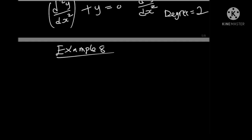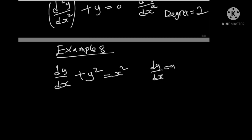Example 8: suppose we have dy over dx plus y squared equals to x squared. As you can see, we only have one differential coefficient: dy over dx. Therefore, the order is 1 and the degree is 1, since dy over dx is raised to power 1. Thank you for watching.